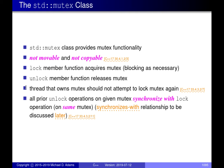A thread that owns the mutex should not attempt to lock it again. The reason is to allow flexibility in how mutexes are implemented. If the algorithm simply checks whether the mutex is held and puts you to sleep if it is, and you try to acquire a mutex you're already holding, you'd just deadlock — you'd go to sleep waiting for a mutex to become available, but it can never become available because you were the one holding it.